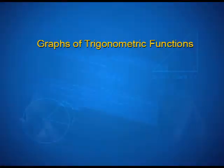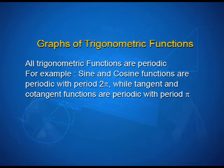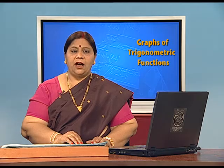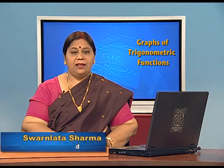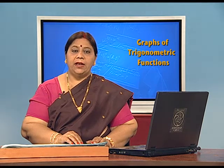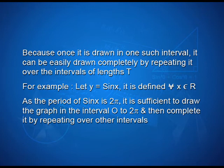Hello students, today we are going to study about graphs of trigonometric functions. All trigonometric functions are periodic. For example, sine and cosine functions are periodic with period 2 pi, while tangent and cotangent functions are periodic with period pi. If the graph of a periodic function with period t is to be drawn in a given interval, it is sufficient to draw the graph only in an interval of length t, because once it is drawn in one such interval, it can easily be drawn completely by repeating it over intervals of length t.